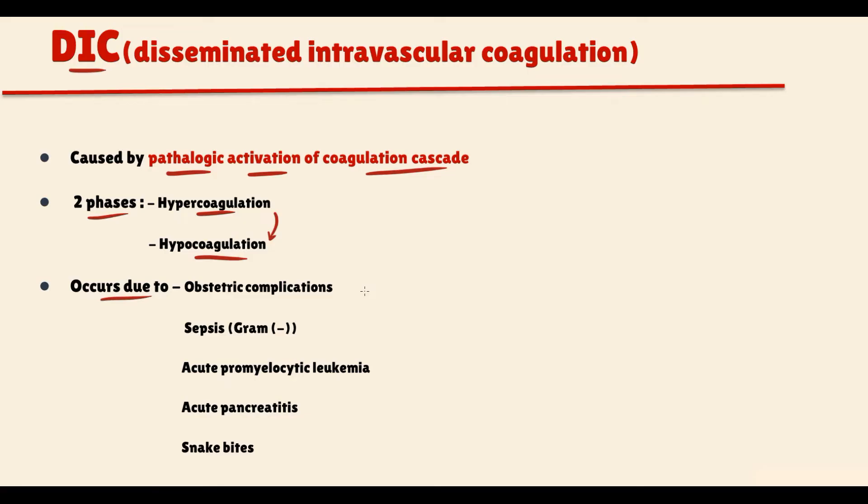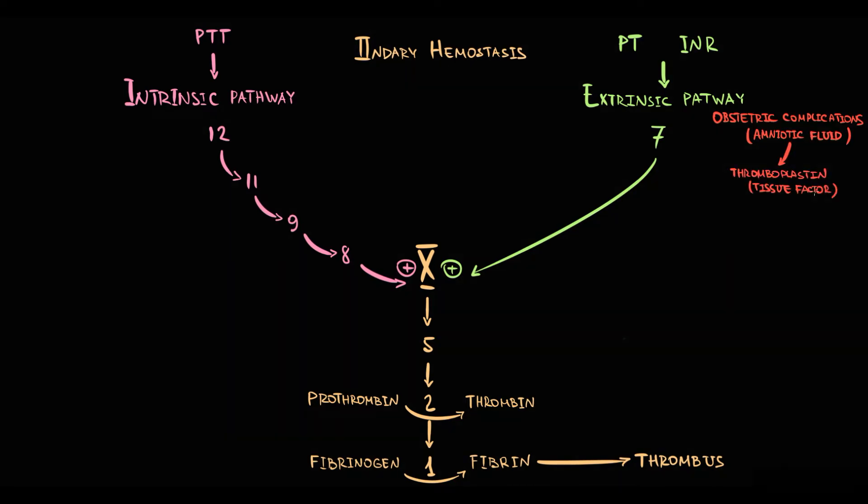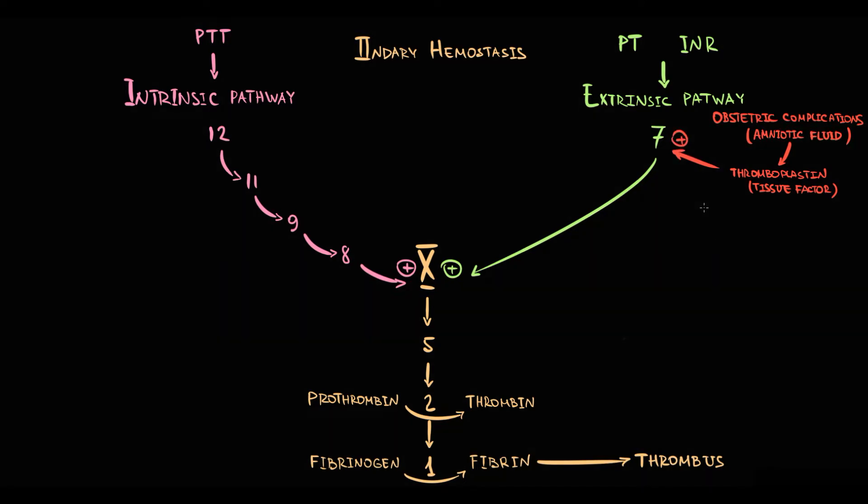The first factor that can cause DIC is obstetric complications. The reason is that amniotic fluid contains tissue thromboplastin, and one of the tissue thromboplastin components is tissue factor. As we know, tissue factor is a strong activator of factor 7. So if amniotic fluid leaks into the blood circulation, potentially it can cause strong pathologic activation of the extrinsic coagulation pathway.